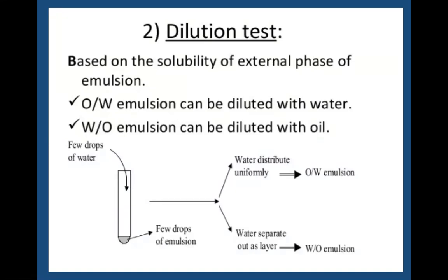Dilution test: if you have a particular emulsion and do the dilution test, you can tell whether it is oil in water or water in oil. Based on the solubility of the external phase: oil in water emulsion can be diluted with water, and water in oil emulsion can be diluted with oil, because the continuous phase will be increased. Based on this dilution test you can determine the emulsion type.